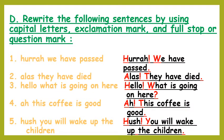Rewrite the following sentences using capital letters, exclamation mark, and full stop or question mark. The exclamation mark is used at the end of words that show joy, sorrow, approval, or wonder — these words are called interjections. First: Hurrah, we have passed. Hurrah is an interjection, so H of 'hurrah' is in capital followed by an exclamation mark, then W of 'we' in capital: Hurrah! We have passed, full stop.